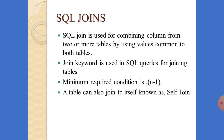A JOIN combines columns from two or more tables by using values common to both tables. So if you want to combine two tables, one or more columns should be the same — minimum one column should be common in both tables. Then only we can combine them. To combine two tables we use the keyword known as JOIN. This JOIN keyword is used in SQL queries for joining tables.